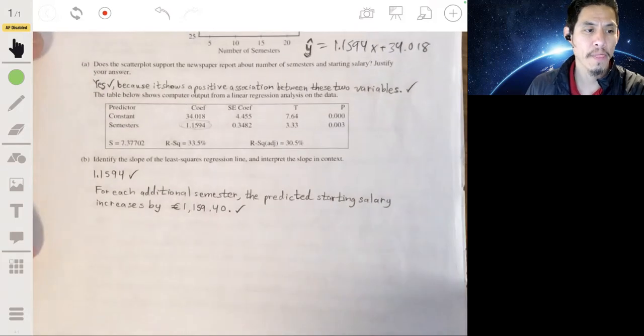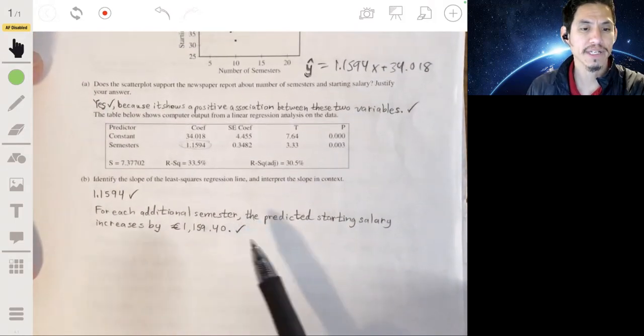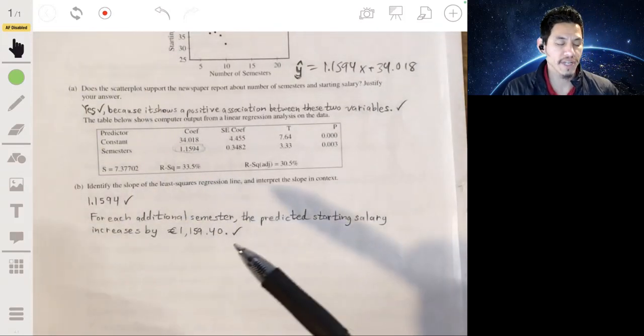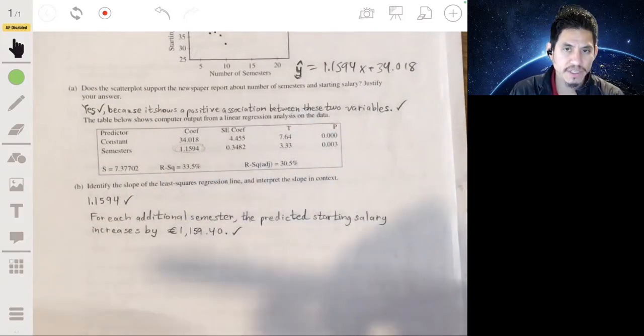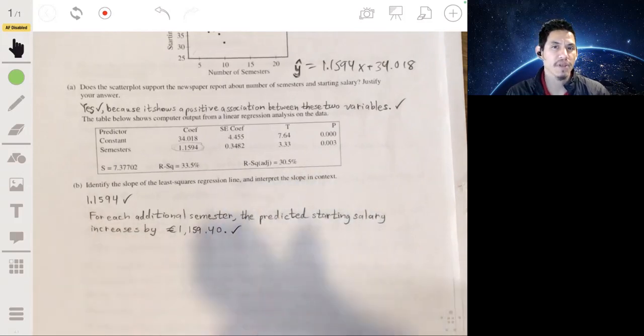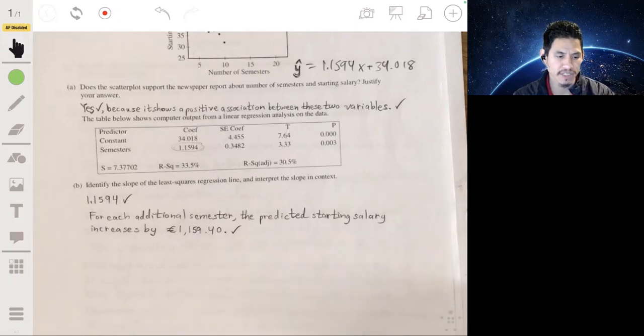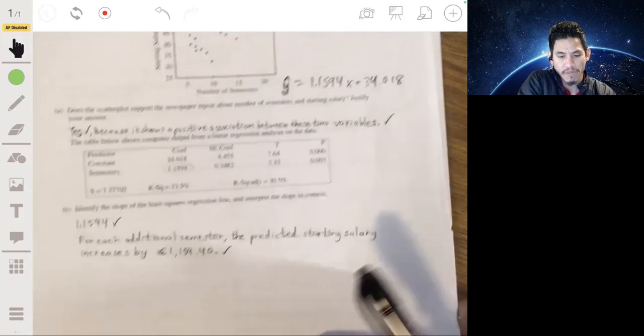So here it is. I wrote it on this one, something like this. So for each additional semester, the predicted starting salary increases by 1,594 euros. So essentially they want you to show them that you understand that the slope represents the change in the response variable over the change in the explanatory variable.